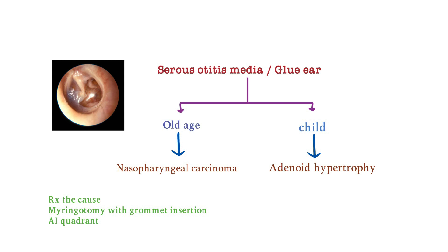This is the answer for this question, asked many times in previous examinations. The treatment is myringotomy with grommet insertion, with adenoidectomy. If it is old age, we will treat the nasopharyngeal carcinoma, and then do myringotomy with grommet insertion. It is done in the antero-inferior quadrant. So this is our first buzzword — Serous Otitis Media.